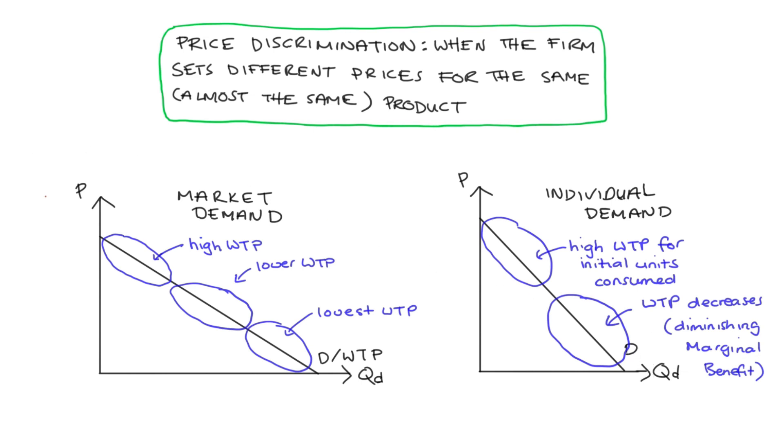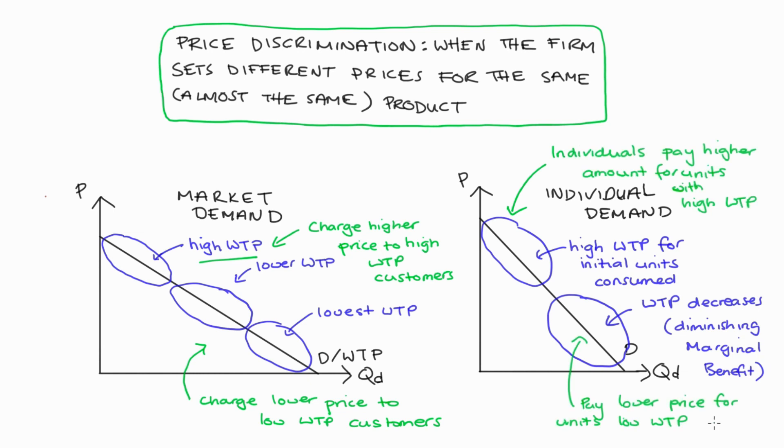Price discrimination then tries to, if we're talking about a whole market, set different prices such that those with a higher willingness to pay are actually being charged a higher price than those with a lower willingness to pay who are charged a lower price. So we discriminate between different types of customers within a market. And we can also see this same sort of strategy at the level of individual demand. If we can get customers to essentially pay higher amounts for those units that they have a higher willingness to pay for and lower amounts for those units which they have a low willingness to pay for, that's also price discrimination.